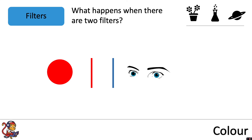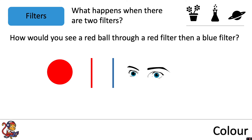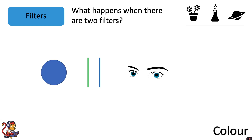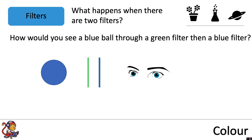How about when there are two different filters? How would you see a red ball through a red filter and then a blue filter? Feel free to pause the video whilst you think about this. The red ball reflects red light, and the red filter allows the red light to pass through. However, it then hits a blue filter which will not allow the red light through, so the ball would appear black. As a final example, how would you see a blue ball through a green filter and then a blue filter? The blue ball reflects blue light, but that will not be able to pass through the green filter, so the ball would appear black.